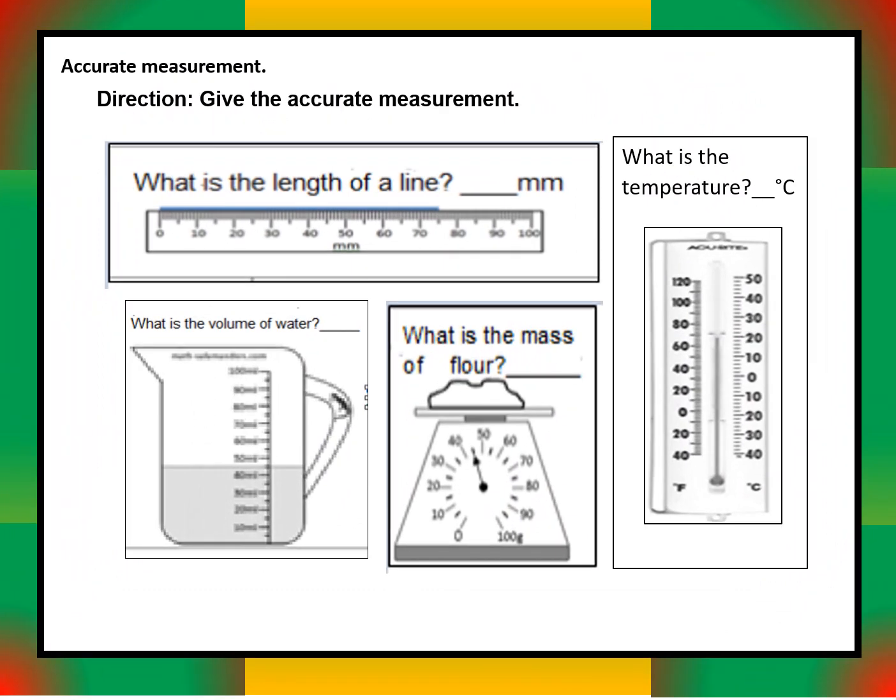For the measurement activity, give the accurate measurement and write it on a separate sheet of paper. Identify the length of a line in millimeters, the temperature in degrees Celsius, the mass in grams, and the volume of water. Write your answers on paper, not on the slide.